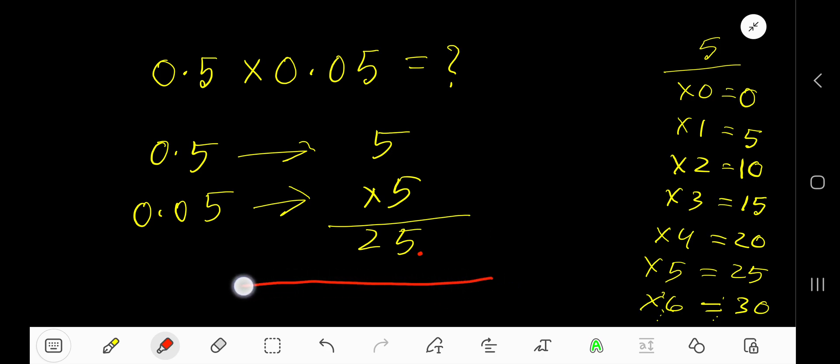How many places? Count after the decimal. Here we have one digit, and here we have two digits. Totally after the decimal we have three digits. So now move decimal one place, two places...